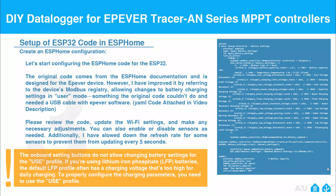Setup of ESP32 code in ESPHome: let's start configuring the ESPHome code for the ESP32. The original code comes from the ESPHome documentation and is designed for the Epiver device. However, I have improved it by referring to the device's Modbus registry, allowing changes to battery charging settings in user mode — something the original code couldn't do and needed a USB cable with Epiver software. I have also attached the YAML code in the video description. Please review the code, update the Wi-Fi settings, make any necessary adjustments, and enable or disable sensors as needed.